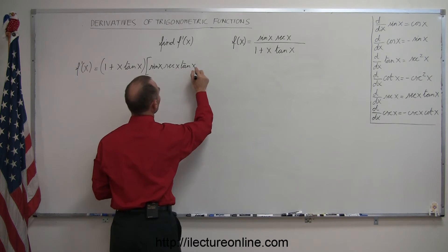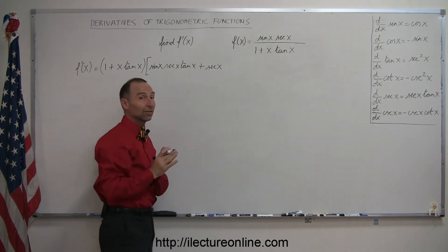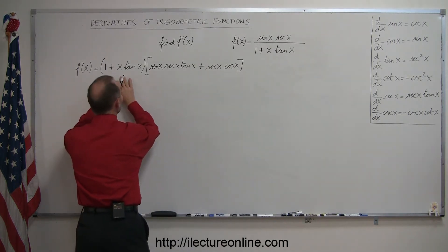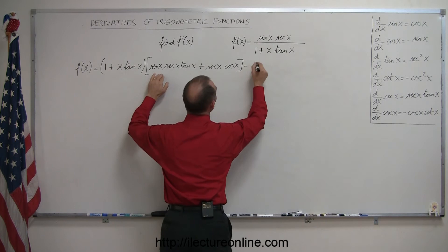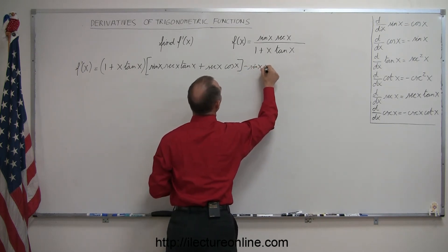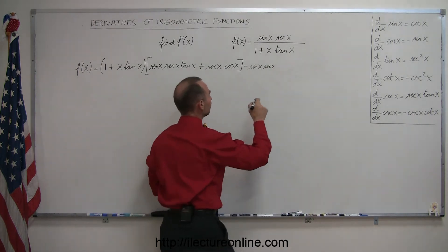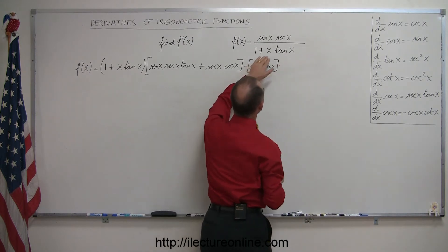So that's the first times the derivative of the second, plus the second, secant of x, times the derivative of the first — the derivative of sine of x is cosine of x. So now we have the denominator times the derivative of the numerator, minus the numerator, which is sine of x times secant of x, times the derivative of the denominator.